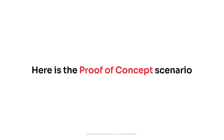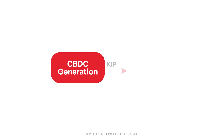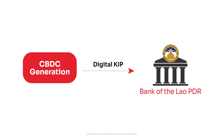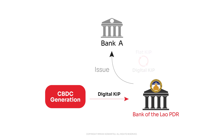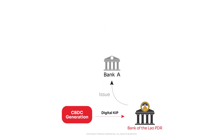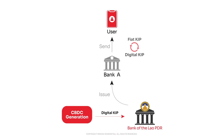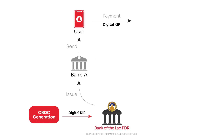Here is the POC scenario. First of all, a money creator creates digital kip. Then Bank A can exchange fiat kip to digital kip through the Bank of the Lao PDR. After that, a user can exchange fiat kip to digital kip via their bank, then go to a shop with merchants accepting digital kip.